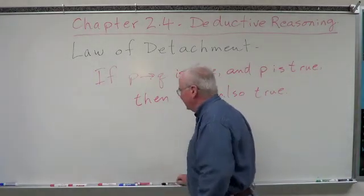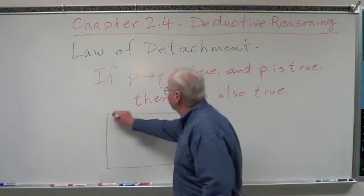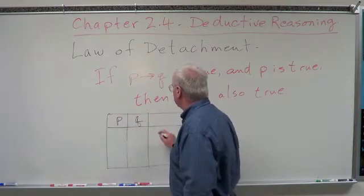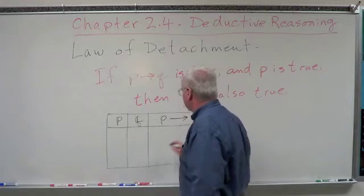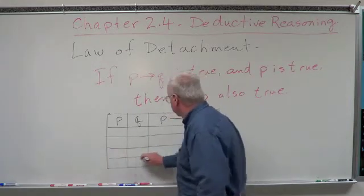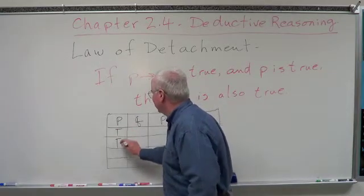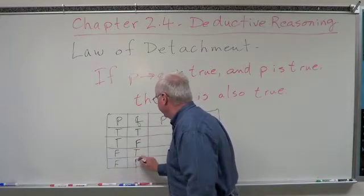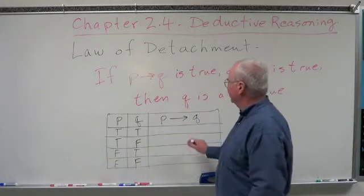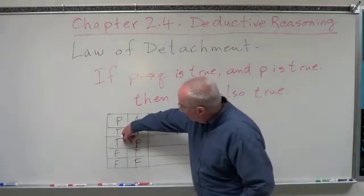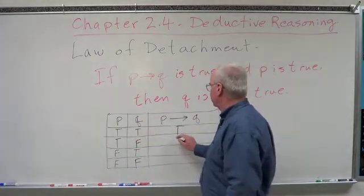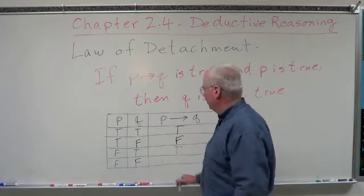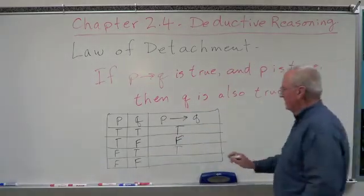Let's look at the truth table for this. We've got P and Q, and P then Q. Set this up standard: T, T, F, F for P and T, F, T, F for Q. We know if they're both true, this statement is going to be true. If they're mixed and the conclusion is false, this is false. If they're mixed and the conclusion is true, this is true. And if they're both false, this is also true.